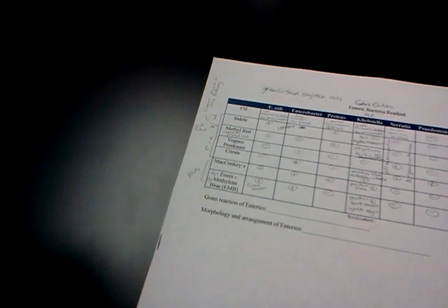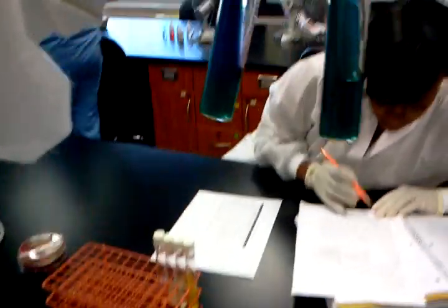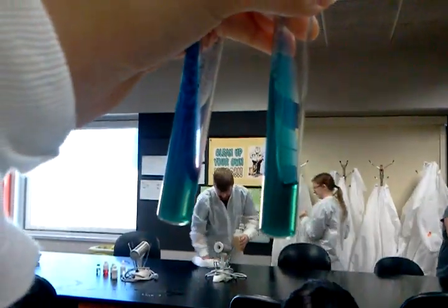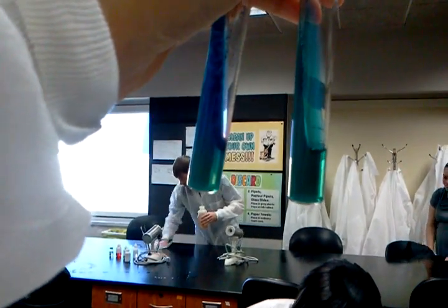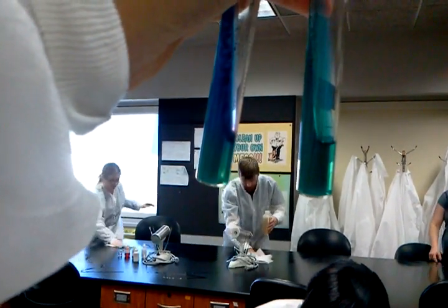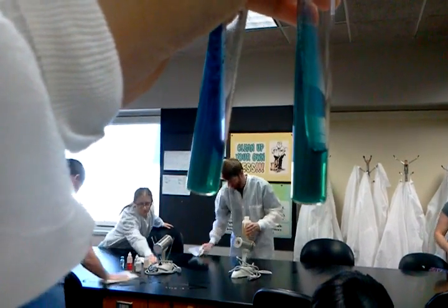Here we have the citrate test and it's positive. It turns blue if the organism metabolizes citrate in aerobic pathway. So we have the green one on the right, that is negative, and it turns blue when positive. The left one is positive, metabolizes citrate.